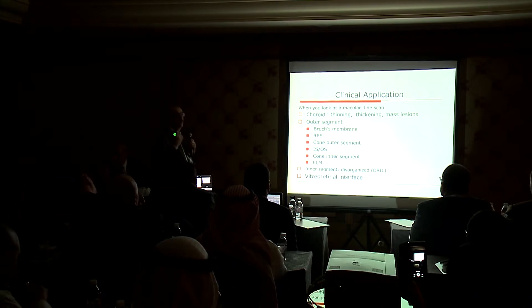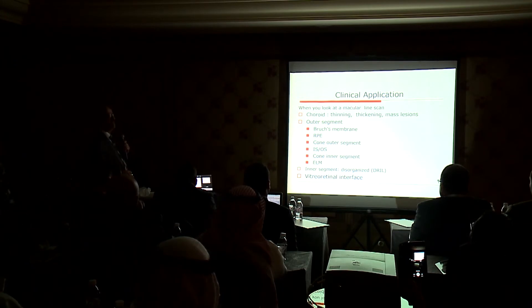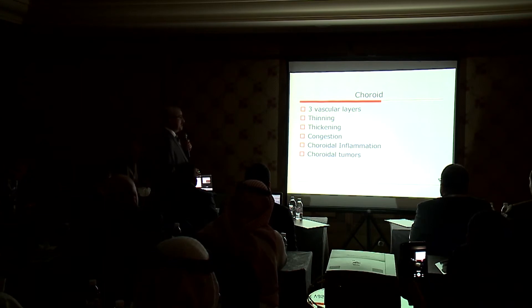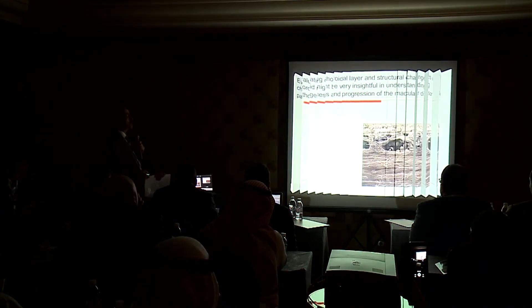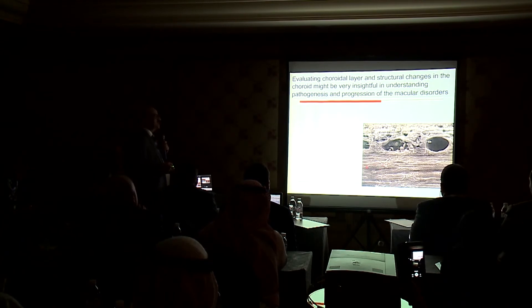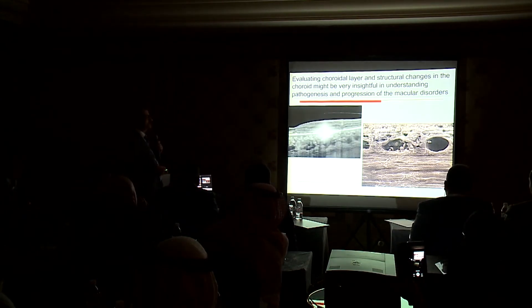What is the clinical application? When we get an OCT, we should look at the choroid first, then the outer segment, the inner segment, and then the vitreous interface. The choroid has three layers — sometimes it is thick, sometimes thin, congested, or shows choroidal inflammation or tumors. We aimed through decades to look at the retina and get this information without invasive maneuvers, and we can now achieve this with swept source OCT. We can see the large and small choroidal vessels and all layers without any intervention.